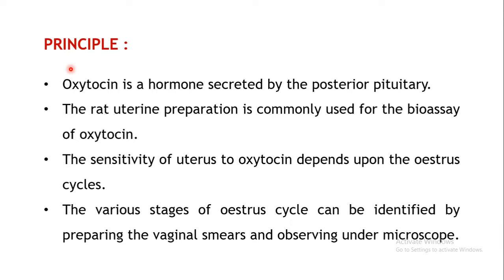Coming to the principle of the experiment, oxytocin is a hormone secreted by the posterior pituitary gland. In this experiment we are going to use the rat uterine preparation because that uterus is quite sensitive towards oxytocin. Oxytocin can induce contractions in the uterus, so we can use the rat uterus for the bio-assay of oxytocin.